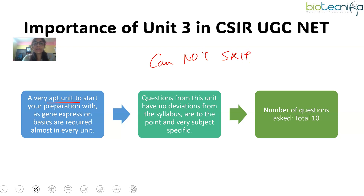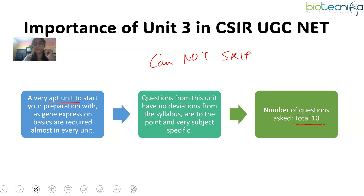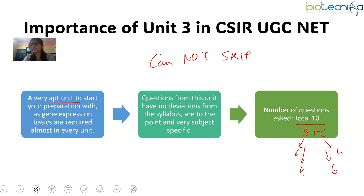Questions from this unit have no deviation from the syllabus — they are to the point and very subject-specific. The questions are fairly straightforward; not many twisted questions come from this segment. The total number of questions you can expect from Unit 3 is around 10 to 11, comprising both Part B and Part C. It can be broken down any way — 6B and 4C, or 4B and 6C, or 5 and 5.